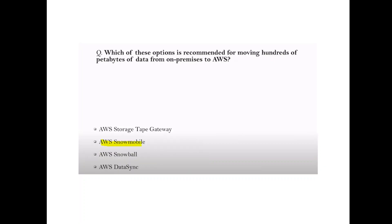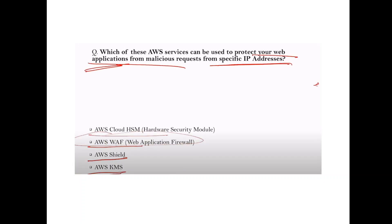Question: Which option is recommended for moving hundreds of petabytes of data from on-premises to AWS? Answer: AWS Snowmobile. Question: Which AWS service can be used to protect your web application from malicious requests? Answer: Web Application Firewall (WAF).